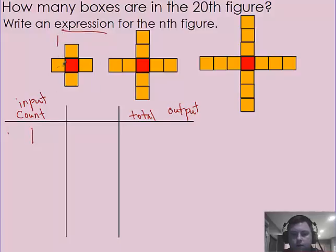And how many boxes are in one? Five boxes. Number two has nine boxes. And then for number three, thirteen boxes.